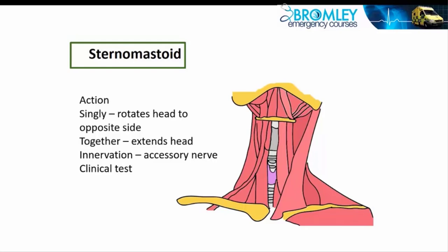The anterior triangle is more complex. It is the space in front of the sternomastoid on each side. Although it looks like one triangle, anatomically it is divided into four triangles — two above the hyoid bone and two below. The ones above are the submental and submandibular triangles, and the ones below are the muscular and carotid triangles. The college says it's worth being aware of the triangles so that you know the anatomy within them, but we don't need to know all that detail.